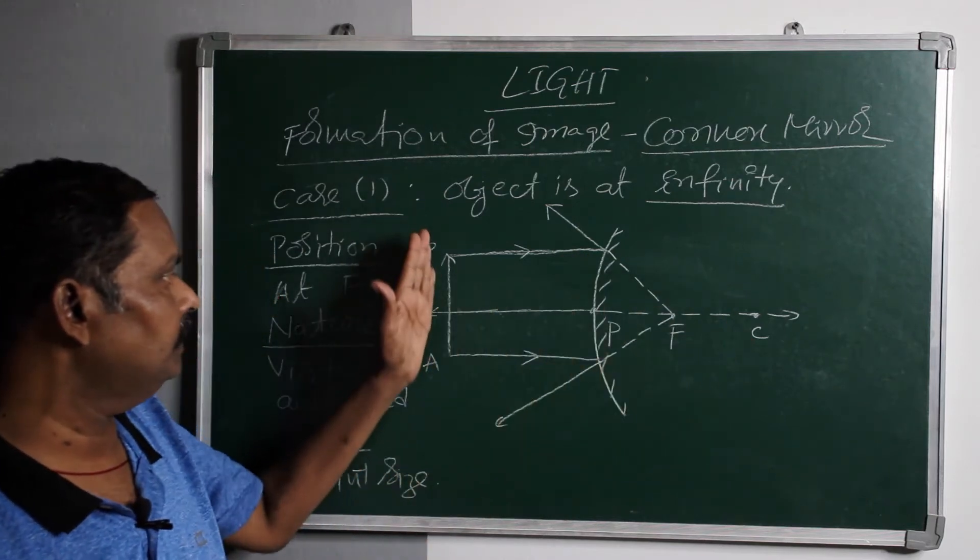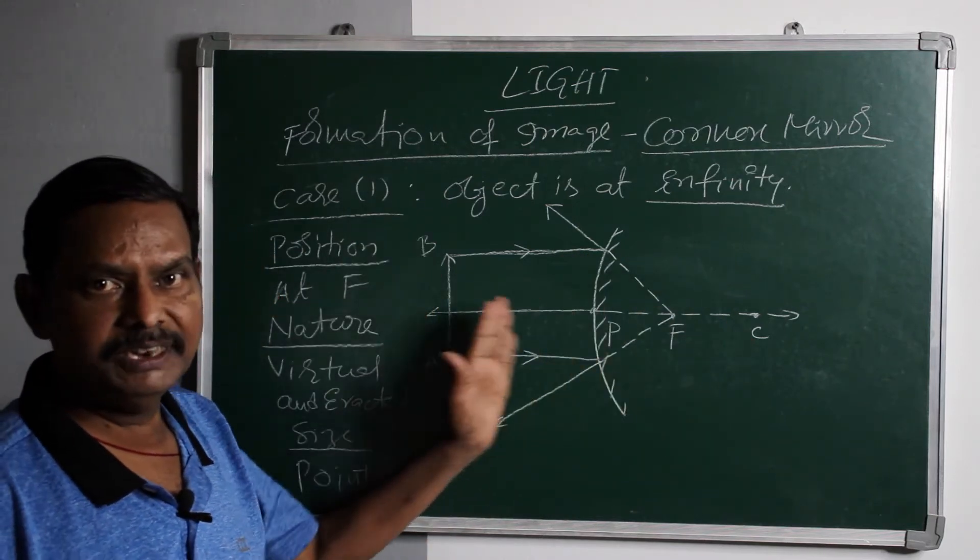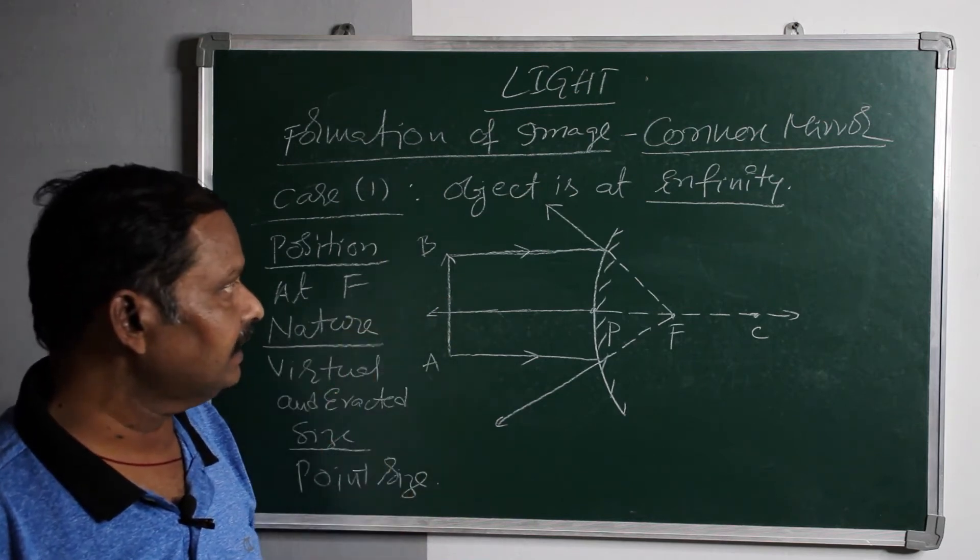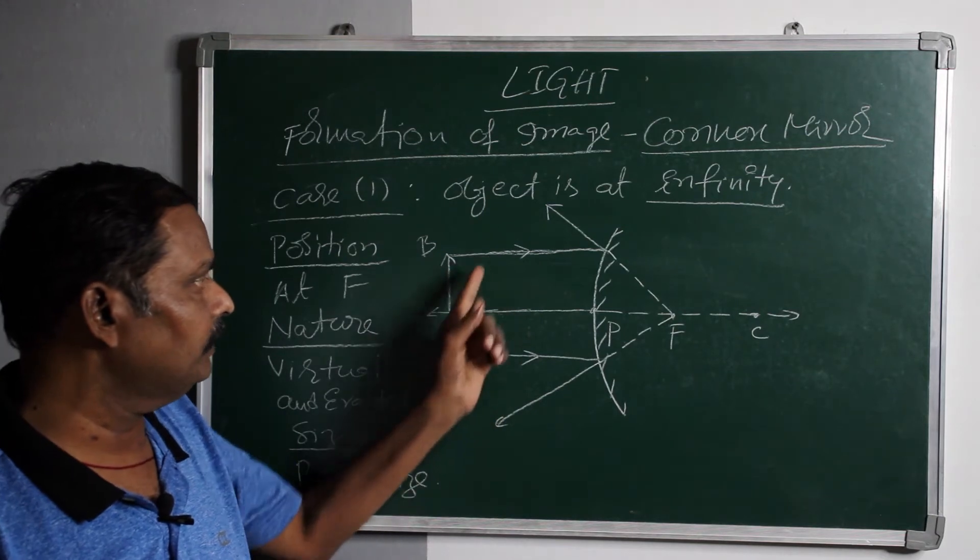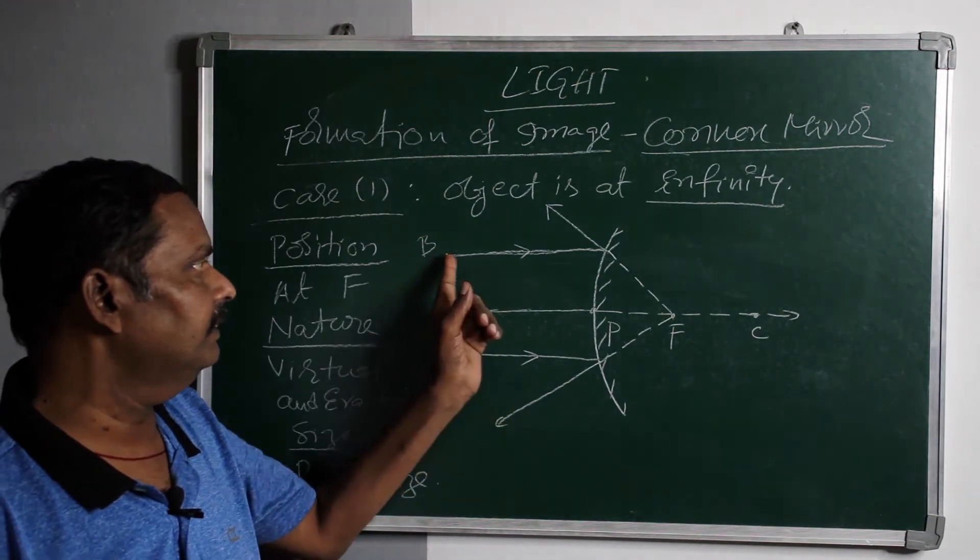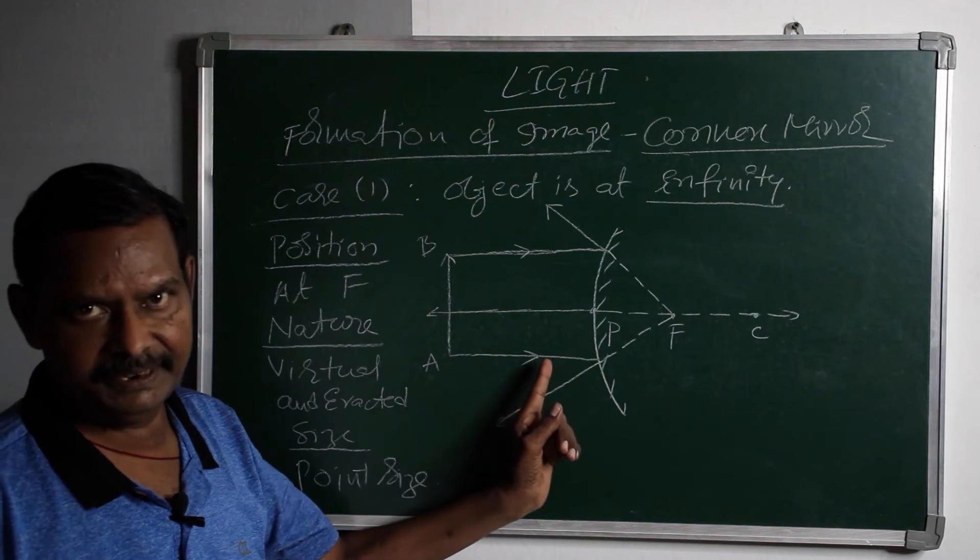Now this is the position of the object which is at infinity. The light rays coming from the object which is at infinity are taken parallel to the principal axis. This is the first incident ray and this is the second incident ray.